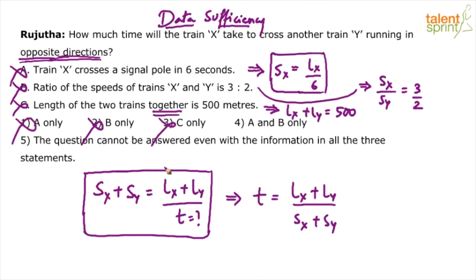Now that we have already eliminated three options, instead of worrying about which combination will work, try with A and B only. Try option four. Option one, option two and option three are eliminated. Try option four. Option four says A and B only would be sufficient, which means if you use the information in A and B together, you will get the answer. Will you get the answer? No.